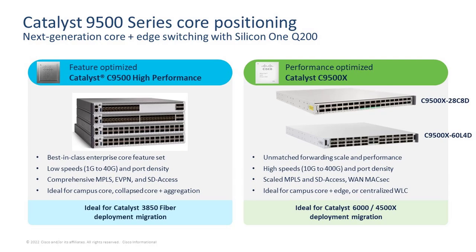A common question is: what happens to the existing Catalyst 9500 High Performance series powered by the UADP 3.2 ASIC? I want to make it very clear that the Catalyst 9500 High Performance series is not going anywhere. We will continue to invest in it by releasing IOS XE releases and developing new features and functionality. The 9500X series addresses a subset of customers needing very high scale and performance at the core — the X series complements and completes the existing portfolio rather than replacing it.